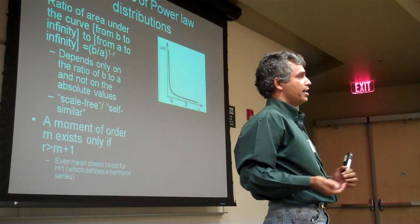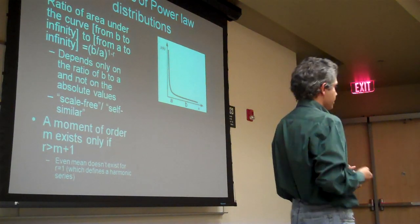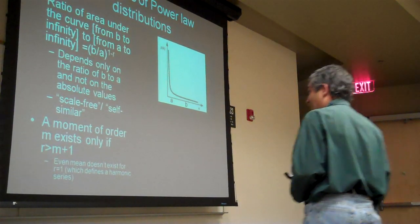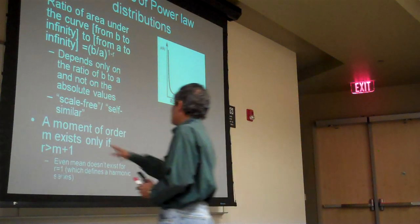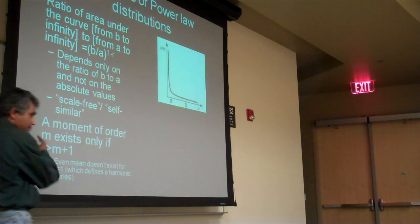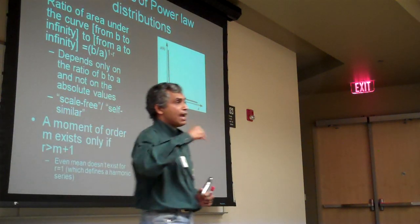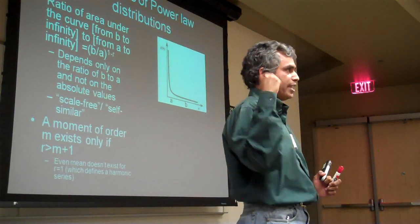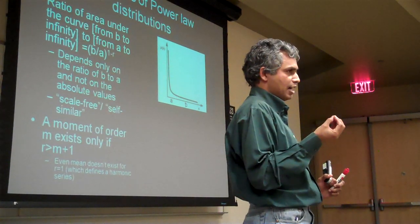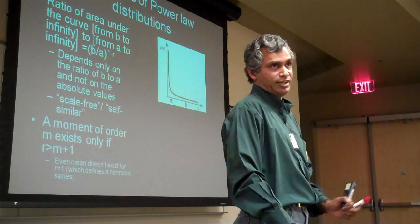It's B/A to the power minus R, where R is greater than 1. And in general, a moment of order M exists only if R is greater than M plus 1. If R equals 1, then you don't even have a first moment — that means the average doesn't exist — which is not surprising because the harmonic series has no average.